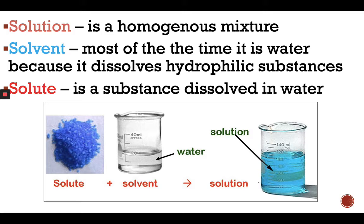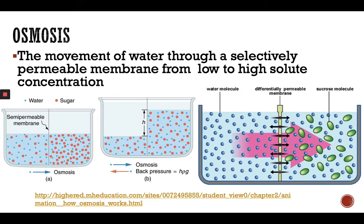Osmosis: the movement of water through a selectively permeable membrane from low to high solute concentration. Osmosis is a very important movement for all cells and in biological and molecular context. It's really important for our body, for our homeostasis. Our plasma membrane is selectively permeable and osmosis helps water molecules go through this permeable membrane. Remember, osmosis is the movement of water from low to high solute concentration.